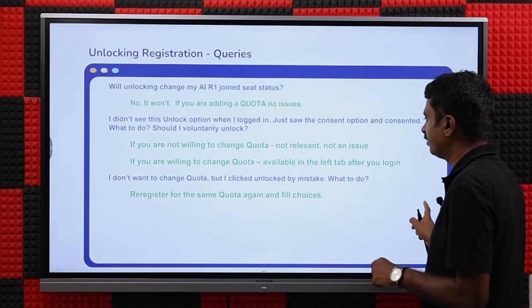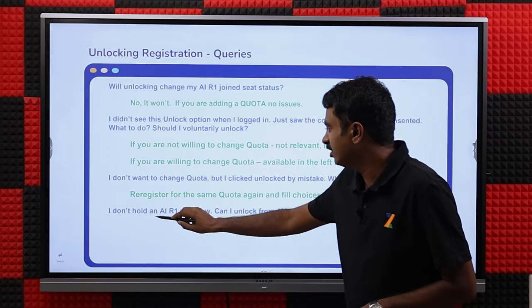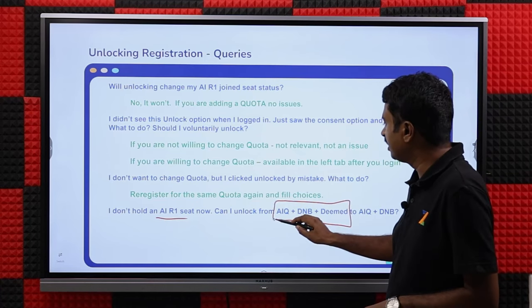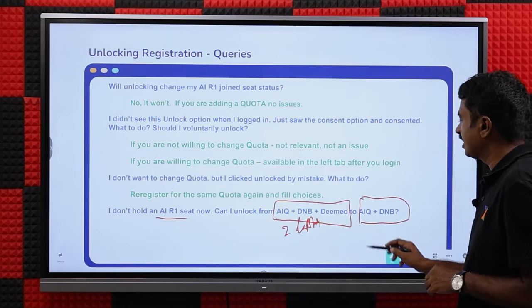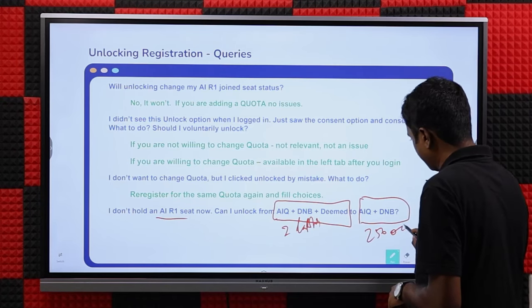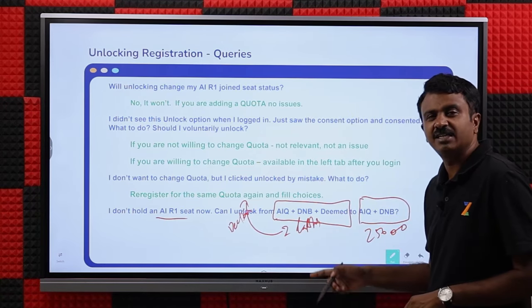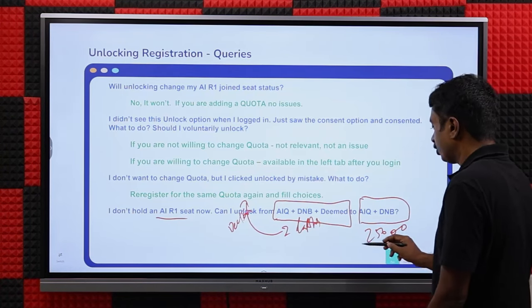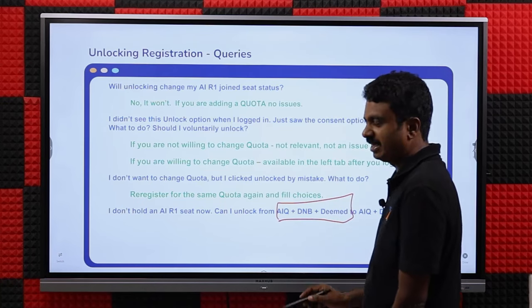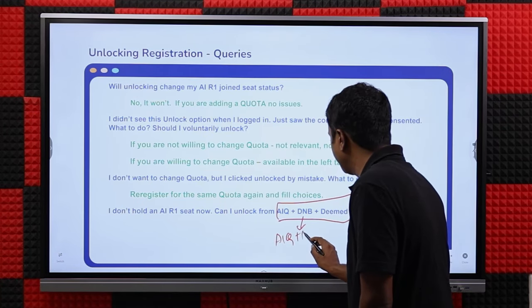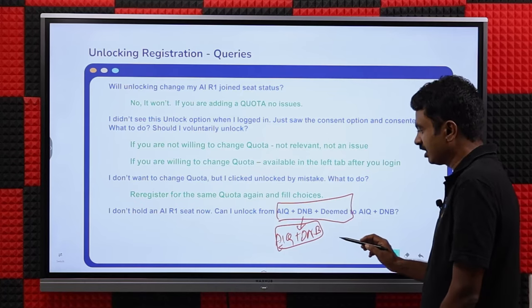A final query: I unlocked, I don't hold an All India Round 1 seat, and I earlier registered for AAQ plus DNB by paying two lakhs. I'm worried about the security deposit — should I unlock and select AAQ plus DNB now? Note that even if you unlock, those two lakhs will come back to you only after December or January. And even without unlocking, you can still fill AAQ plus DNB choices — deemed you can completely ignore. That is an option available.